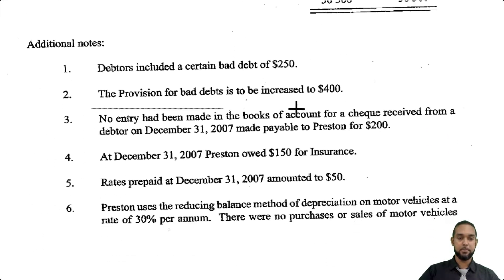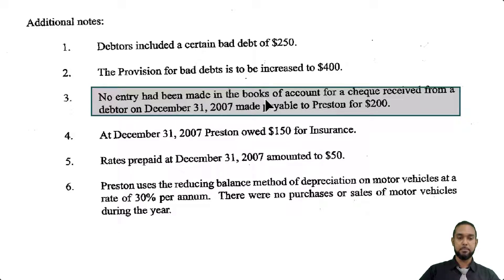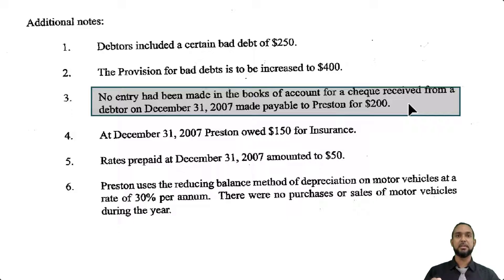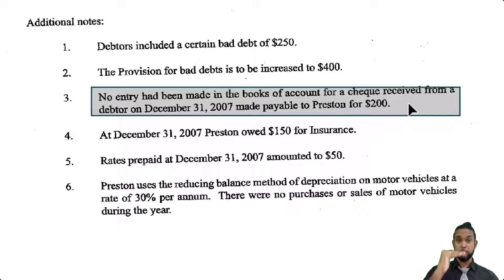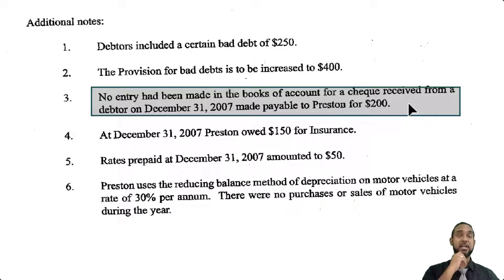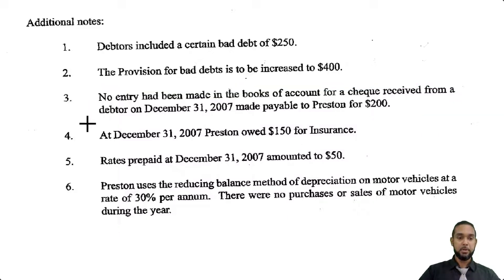Item three says no entry has been made in the books of account for a check received from a debtor on December 31st, 2007, made payable to Preston for $200. So we've received a check from a debtor for $200, which means the debtor is paying us back. The debtor's account balance is going to go down and bank is going to go up. So that's going to affect the debtors balance and the bank balance — we're going to have to make an adjustment for that item.